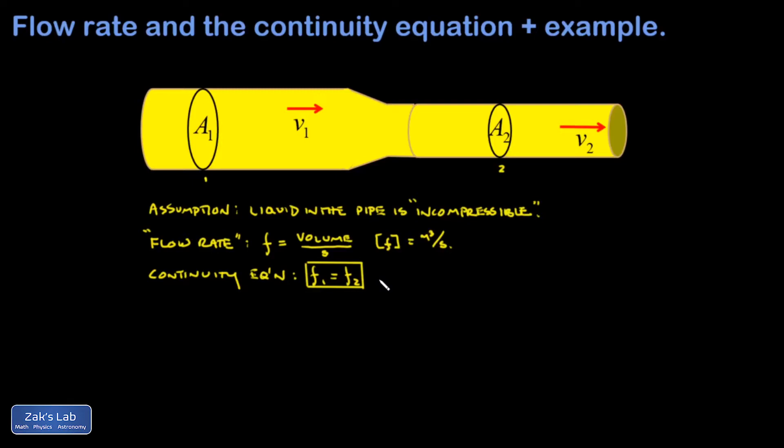But of course, we want to relate this to the speed of the fluid. And so to do that, I'm going to let a small amount of time go by, and we're just going to watch the fluid move forward at the surface A1, and we're going to watch the fluid move forward at the surface A2. And as it does that, it's going to trace out a cylinder. So those are cylinders of fluid that have been traced out during a time delta T.